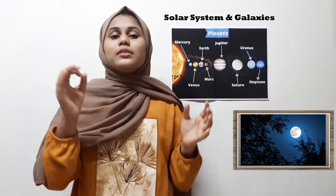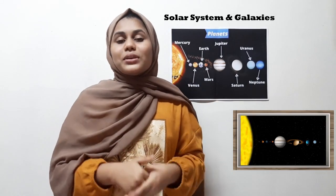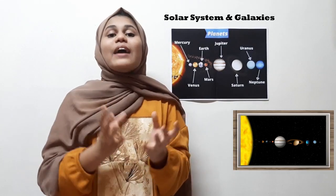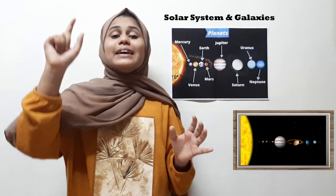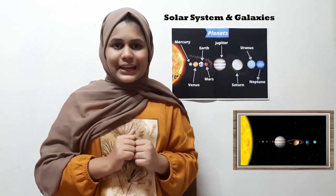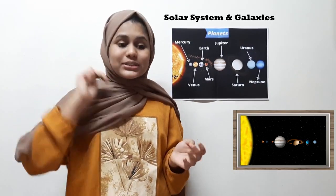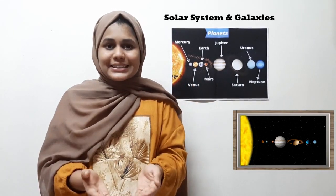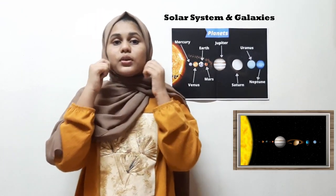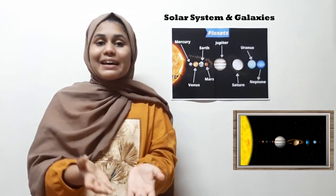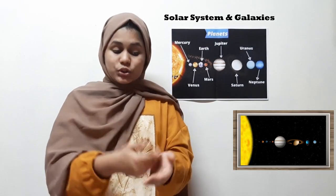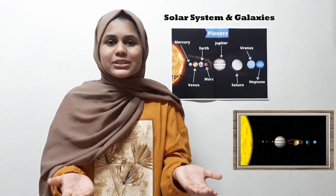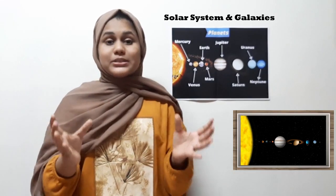The Earth is not the only planet with natural satellites — all planets except Mercury and Venus have natural satellites. Earth has one satellite, Mars has two, Jupiter has 63, Uranus has 27, and Neptune has 13. So Jupiter is the planet with the most natural satellites.